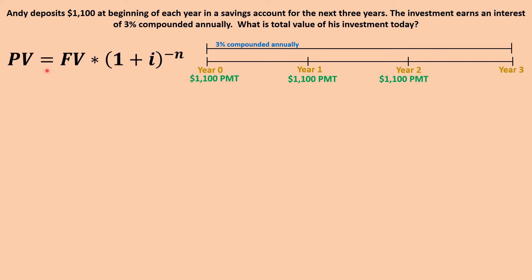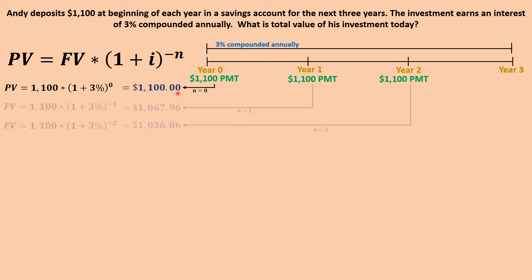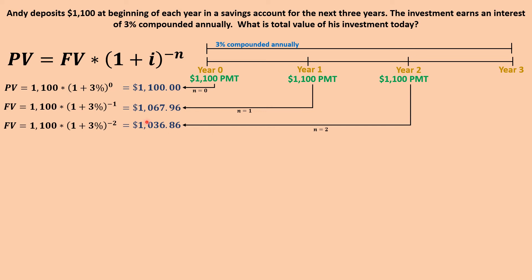We can use the present value of compound interest equation to solve this. Calculating manually: in year zero, PV = $1,100; in year one, PV = $1,067.96; and in year two, PV = $1,036.86. Adding these together gives a total present value of $3,204.82. This is the total value of Andy's investment today.